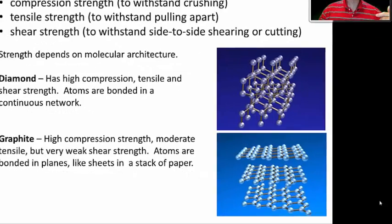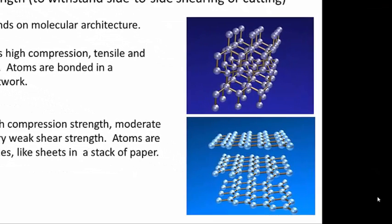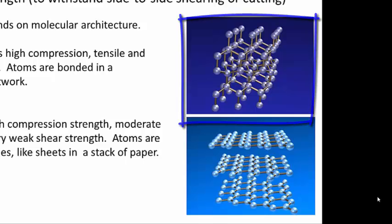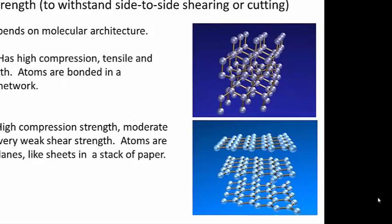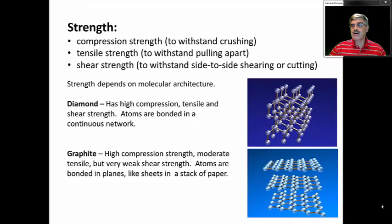Now a point is that strength will depend upon molecular architecture. Going back to examples of carbon, you may remember that there are at least two forms of carbon that we talked about. One is diamond and the other is graphite. Diamond is a very hard substance. It has high compression strength, it has high tensile strength and high shear strength. And it's because the atoms of carbon are all bonded together forming four bonds to other carbon atoms.